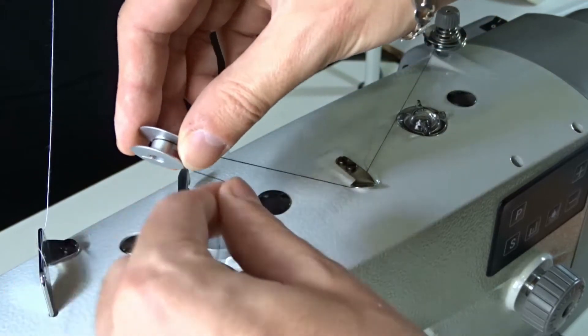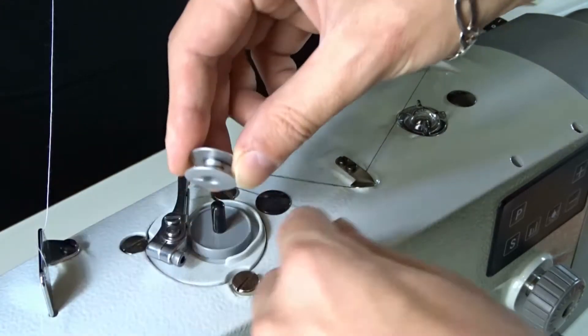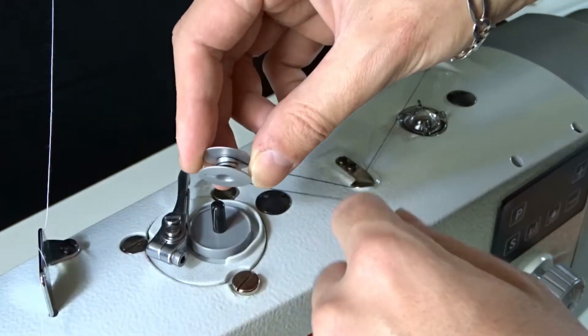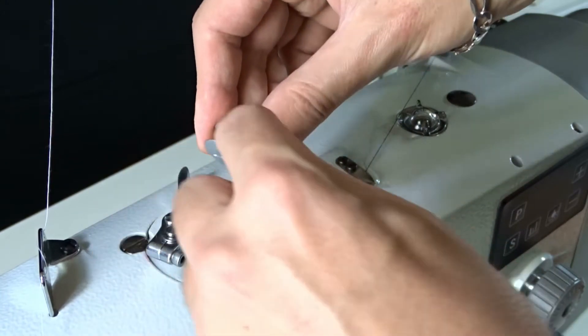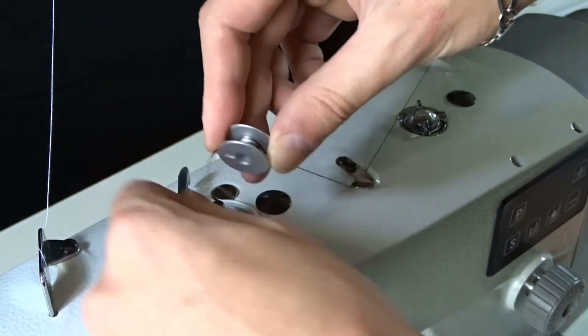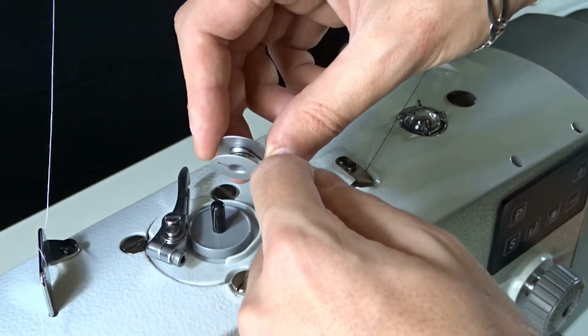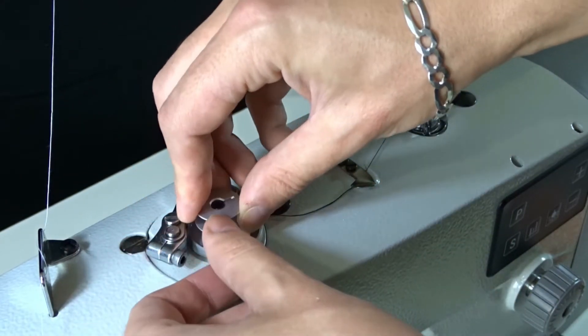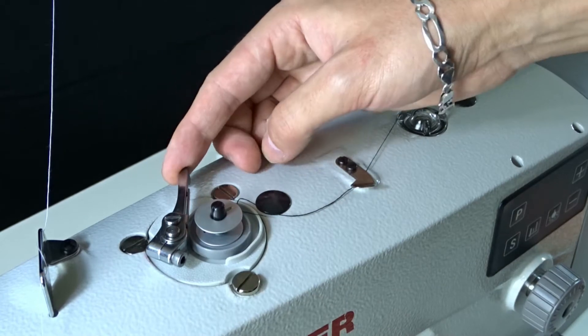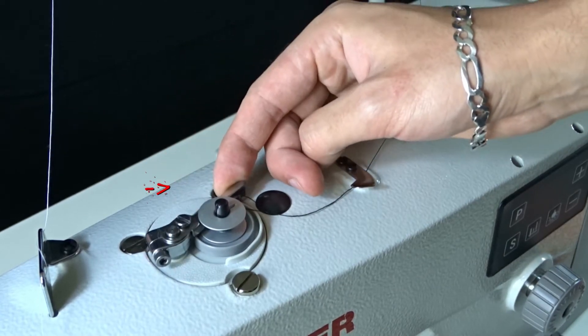Then wrap it around the bobbin several times and place the bobbin on the winder. Pull the metal lever towards the bobbin and the winder will engage.